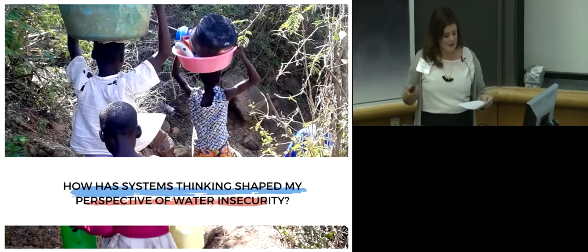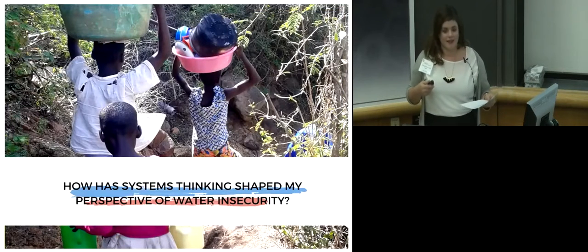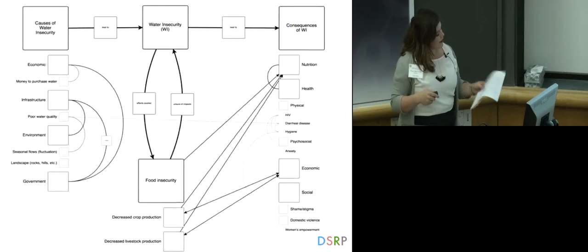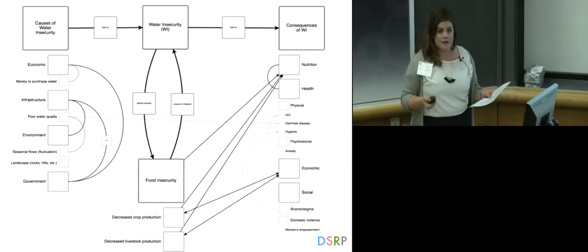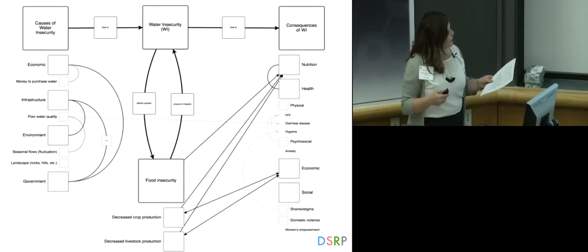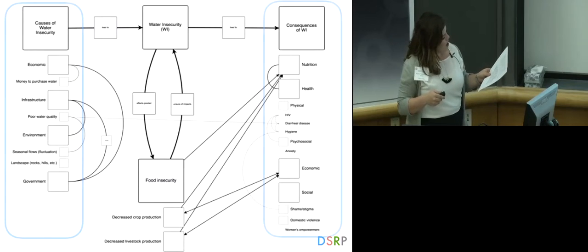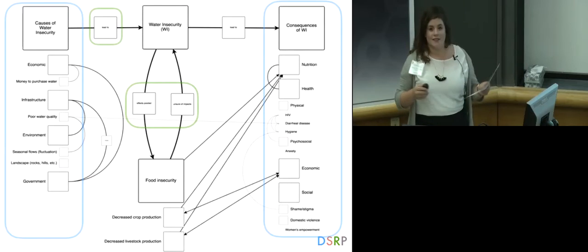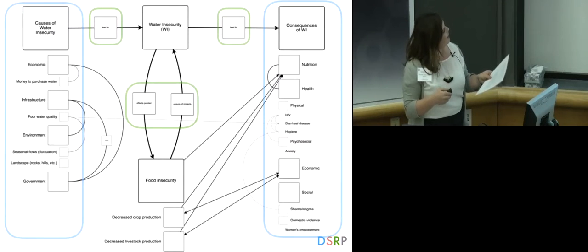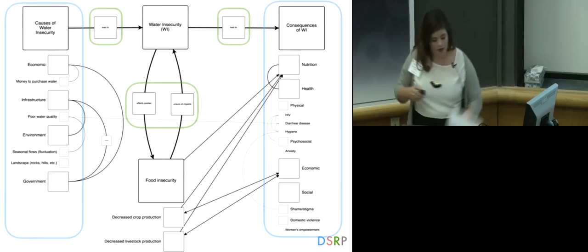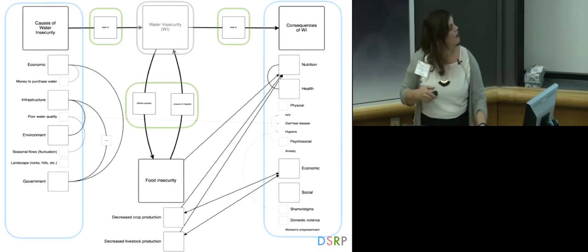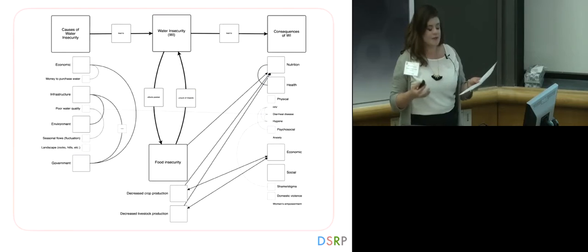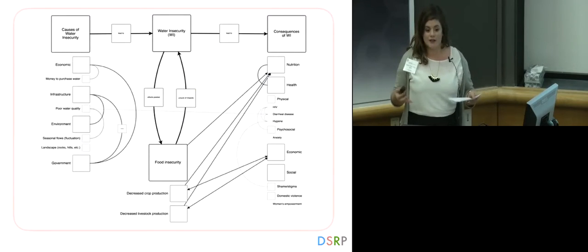How has systems thinking shaped my perspective about water insecurity? Systems thinking has allowed me to map findings from our qualitative interviews — incredibly nuanced — into a navigable framework of distinctions (shown in blue), or what water insecurity is or isn't; relationships (shown in green), or how these components work with one another synergistically; and all of this from the perspective of water insecurity highlighted in gray, which together form a system that I can use to understand the data myself and pair these tools with others.